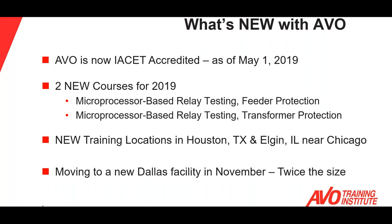We have two new courses added this year: microprocessor-based relay testing feeder protection and microprocessor-based relay testing transformer protection. If you'd like more information on either of those courses, please let us know in the comments box on the survey and we'll have an account executive reach out to you. We've also added two new training locations — one in Elgin, Illinois near Chicago at Circuit Breaker Sales, and the other in Houston, Texas at Powell Electrical Systems. You can visit our website in the locations dropdown to view details and course schedules for each of those new locations.